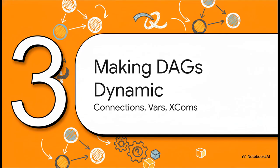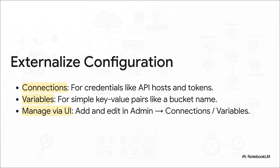Static workflows are a great start, but real-world workflows need to be flexible. Let's talk about how to make your DAGs dynamic using three key features: Connections, Variables, and XCOMs. This is probably the most important rule for production-ready code — get your configuration out of your code. Never hard-code an API key or a password. Instead, Airflow gives you secure tools: use Connections to store credentials for databases or APIs, and use Variables for simple things like a bucket name or a file path. This is how you keep your DAGs secure and reusable.